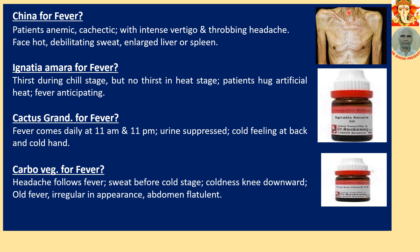Cactus Grandiflorus for fever: fever comes daily at 11 am and 11 pm, urine is suppressed, cold feeling at the back and cold hands. Carbophage for fever: headache follows fever; sweat before the cold stage; coldness spreads from the knee downwards. It is an old, irregular fever with a flatulent abdomen — Carbophage being a well-known homeopathic medicine for flatulence, meaning too much air or wind in the abdomen. In fever this symptom is also present.